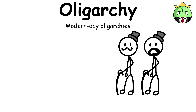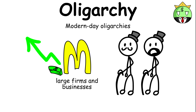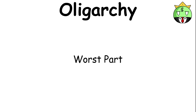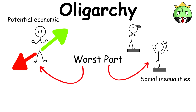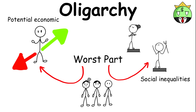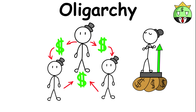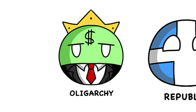Modern-day oligarchies often arise when large firms and businesses become too financially powerful. The worst part about oligarchies is the potential economic and social inequalities between different classes. Only the rich and powerful benefit from decisions made by their fellow oligarchs.